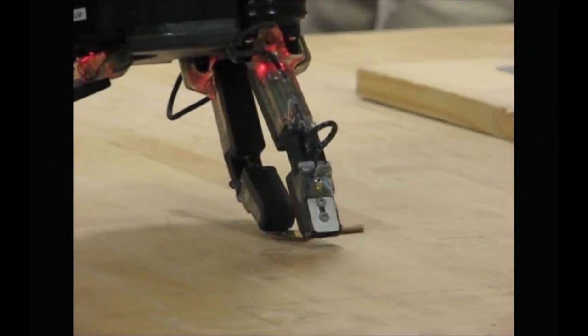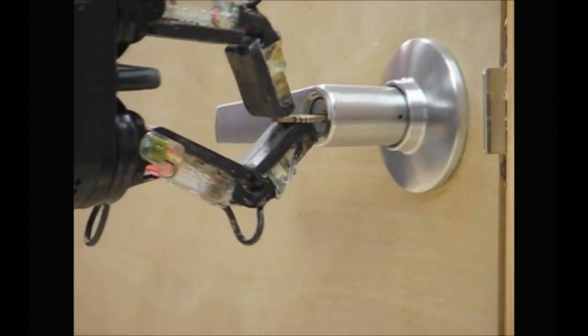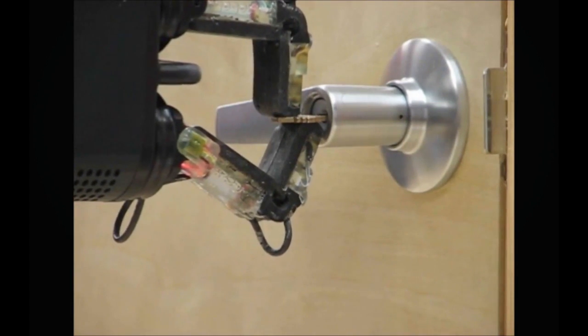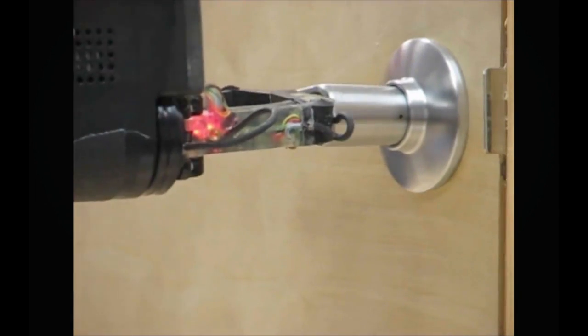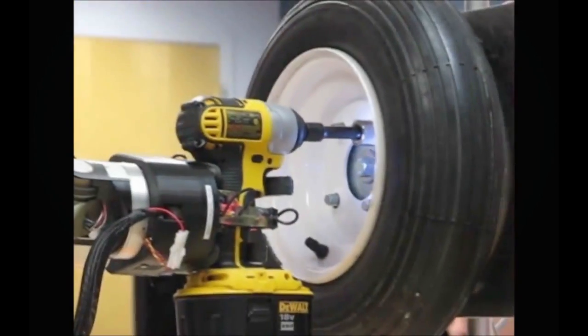Its rubber fingers can adapt to almost any shape. It can pick up a key, manipulate it, and use it to unlock and open a door. It can even change your tire.